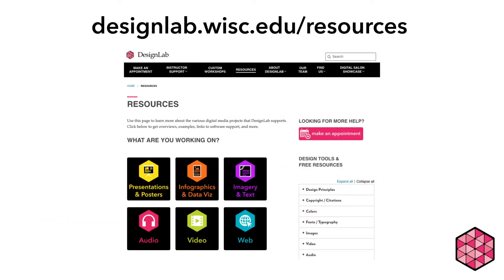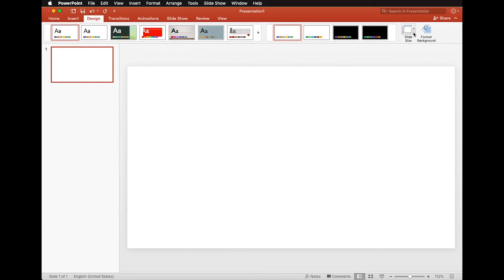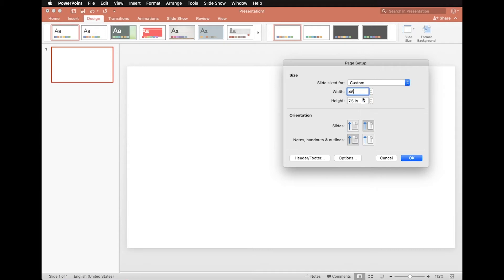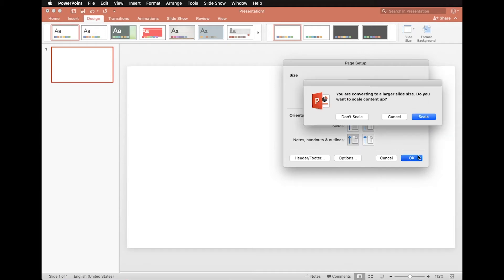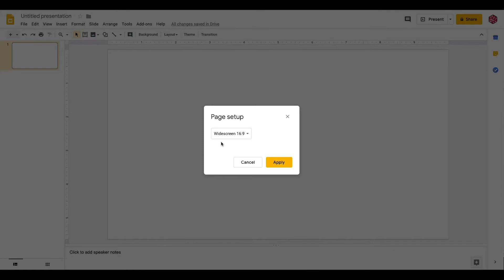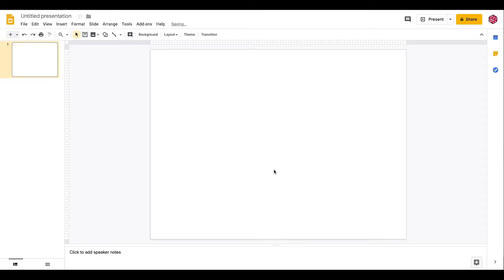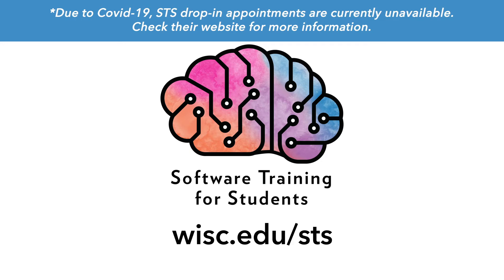Check out the resources page on the Design Lab website for general software recommendations for research posters. Additionally, make sure the first thing you do is size your poster appropriately. It is a common mistake to start designing in PowerPoint, Keynote, or Google Slides and then realize too late that the size is not correct, leading to a huge headache of rearranging. Start first with the size of your poster to save yourself time later. Our friends at Software Training for Students can help you learn the best tools, offering free workshops on PowerPoint, Keynote, and Adobe Illustrator, as well as one-on-one appointments or drop-ins at the Design Lab.